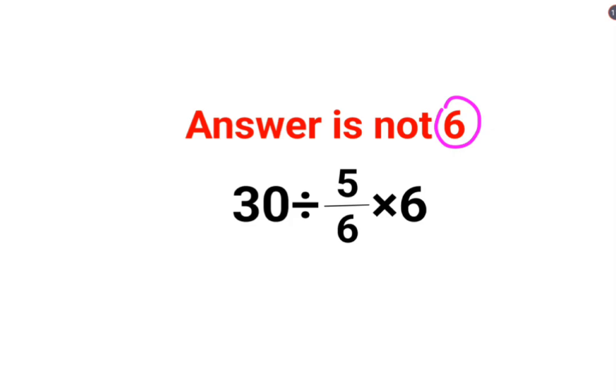So here a lot of people think that this 6 and 6 gets cancelled, so you are just left with 30 divided by 5. So answer for this question is supposed to be 6. No, that is not how these things work.